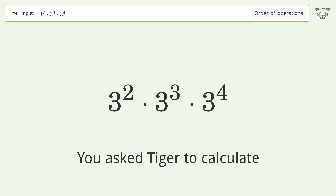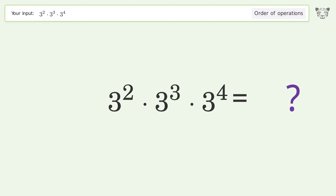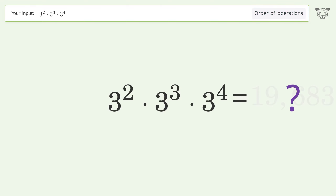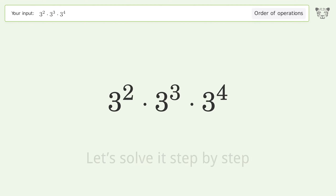You asked Tiger to calculate. This deals with the order of operations. The final result is 19,683. Let's solve it step by step.